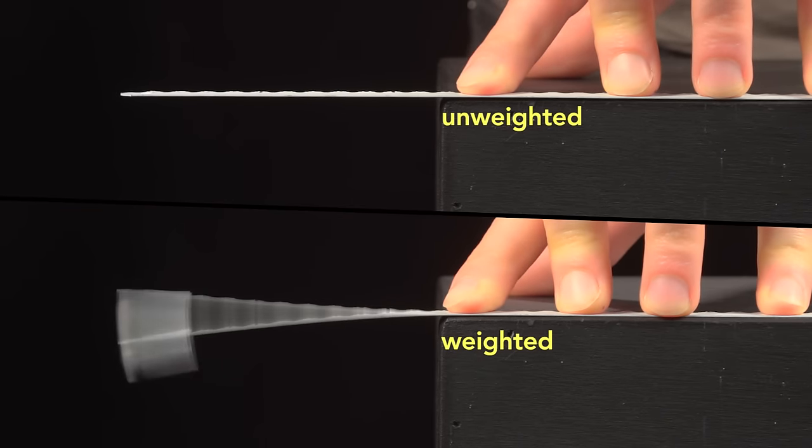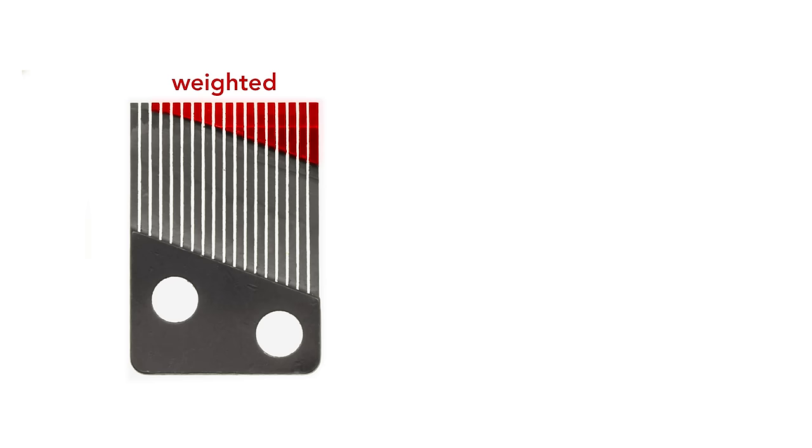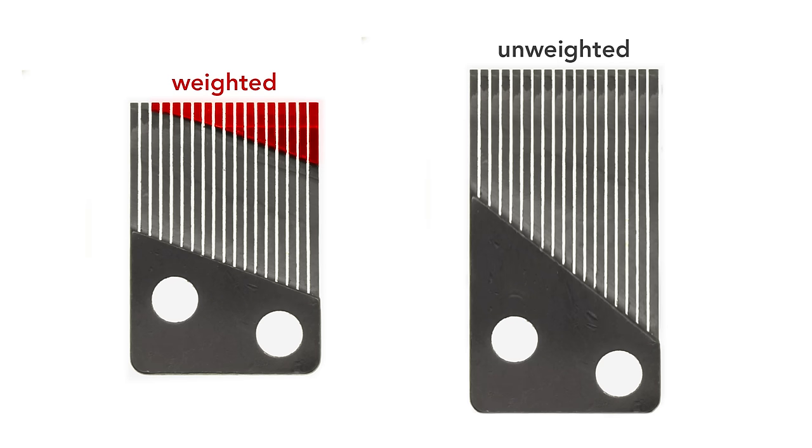Because of this weighting, the comb is more compact. For this particular design, if the comb were unweighted, it would have to be roughly 40% longer to produce the same range of frequencies. Another advantage of the weighting is that the combs can be mass manufactured in a single size. You just cut away the proper amount of material to produce a unique set of notes.